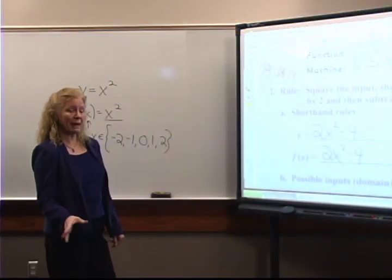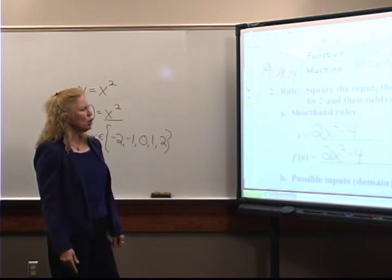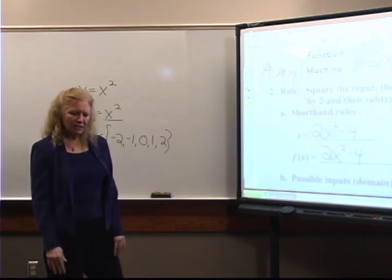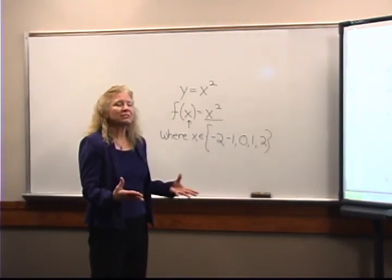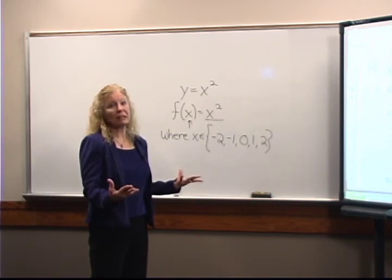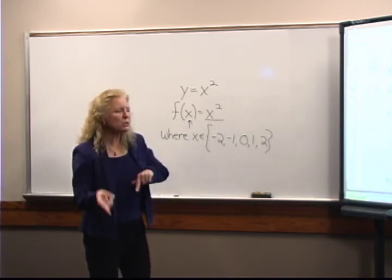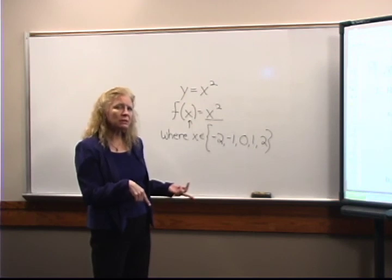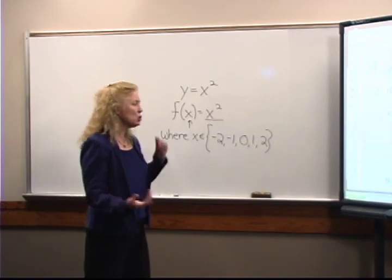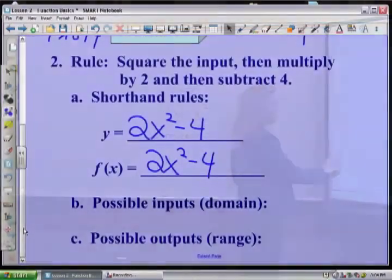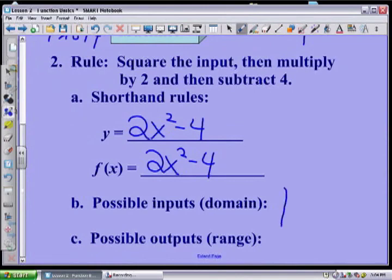For this particular function, let's just talk about the domain. You have to ask yourself: are there any numbers I couldn't square? None that I can think of. Are there any numbers that after I square them I can't multiply by 2 and then subtract 4? There aren't any limitations, so in fact my domain would be all reals: negative infinity to positive infinity.